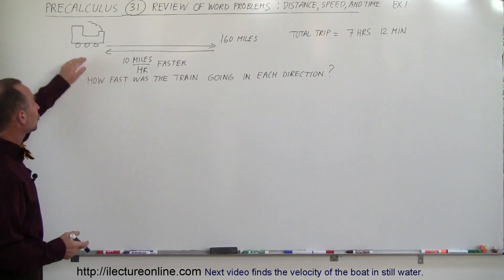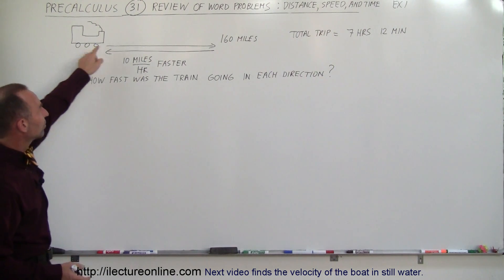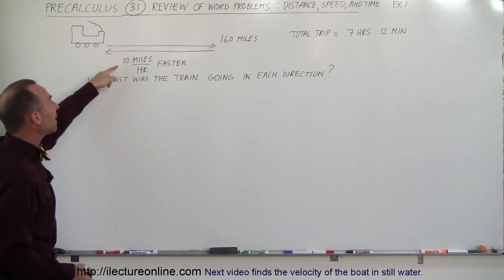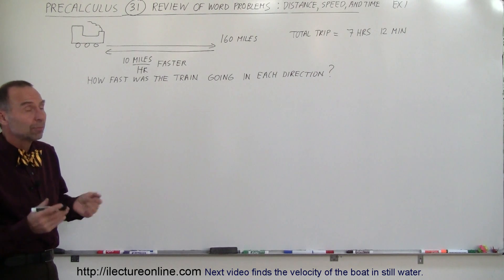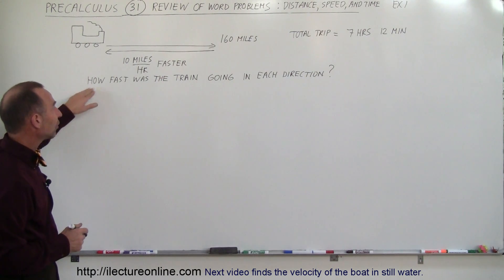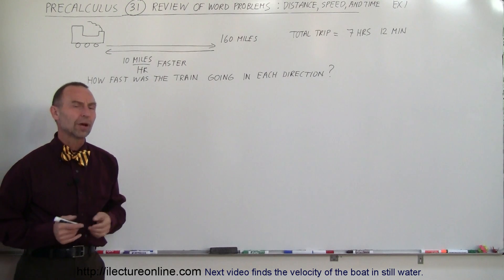Let's say we have a train that's traveling 160 miles out, turns around, comes back, and on the way back travels 10 miles an hour faster than when he went, and the total trip took 7 hours and 12 minutes. How fast was the train going in each direction?